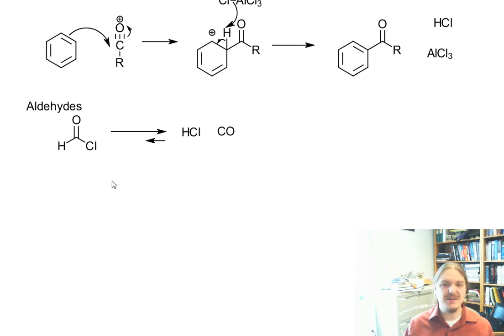But it turns out that as long as you know that, you can convert benzene into benzaldehyde by using, not trying to go out and find formyl chloride, but by using carbon monoxide.